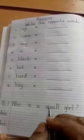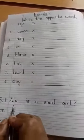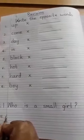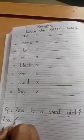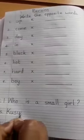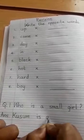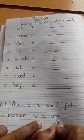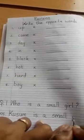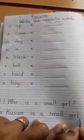Children, after opposite words, you are going to write one question and answer. That is, who is a small girl? Who is a small girl, children? Kusum. You are going to write here: Kusum is a small girl. You have to say and write when you are writing. Small girl. G-I-R-L. Full stop.